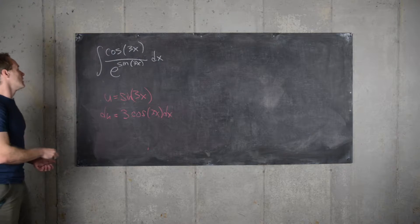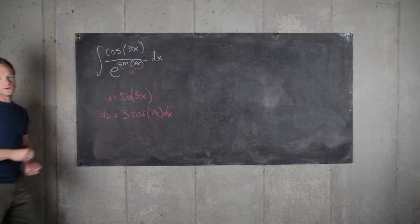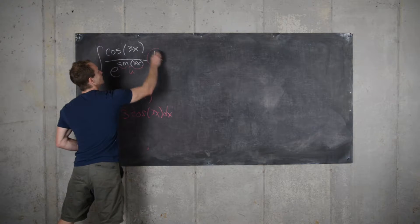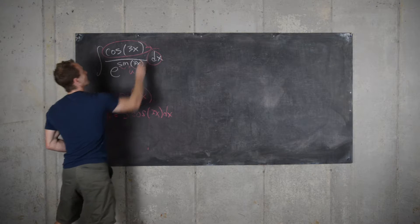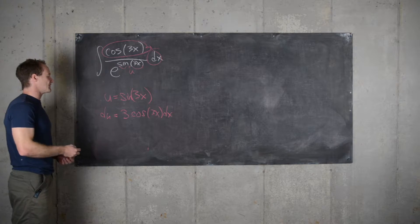And now we can see this thing shaping up. So all of this is going to turn into u. And now we have in the numerator everything left over. So we have this cosine of 3x term, but we're off by a factor of 3.